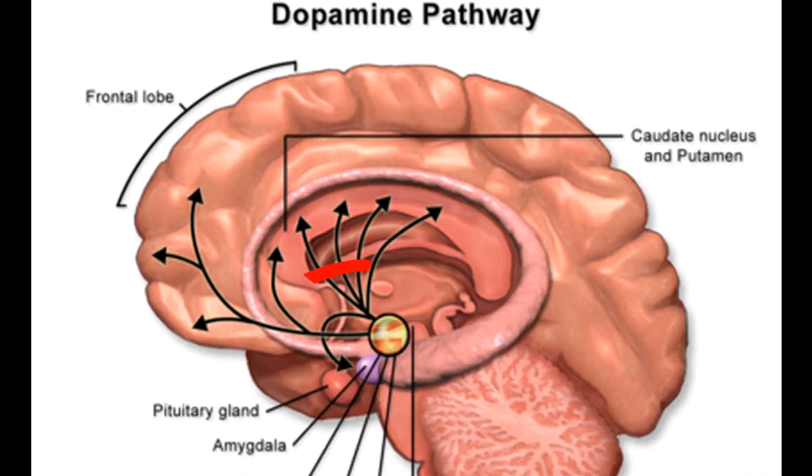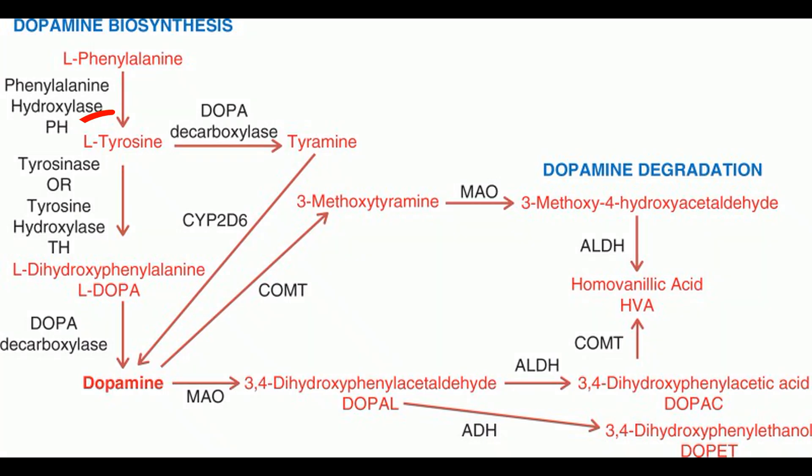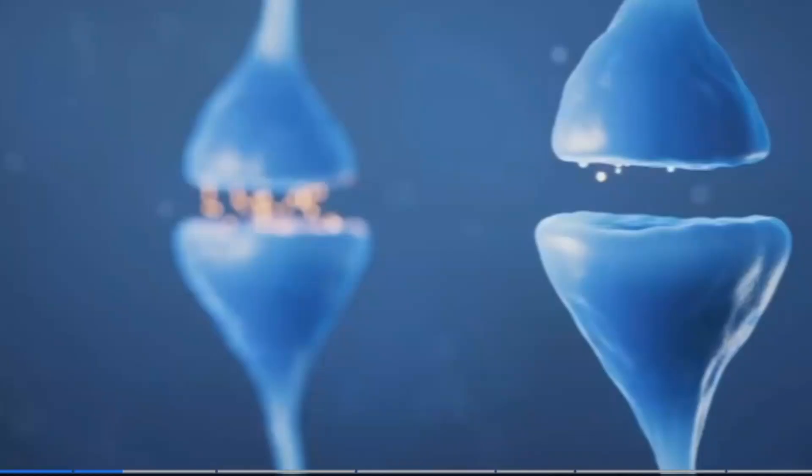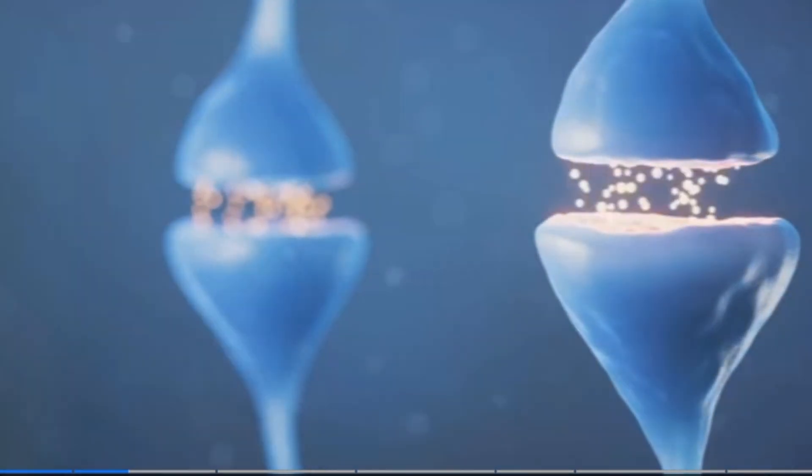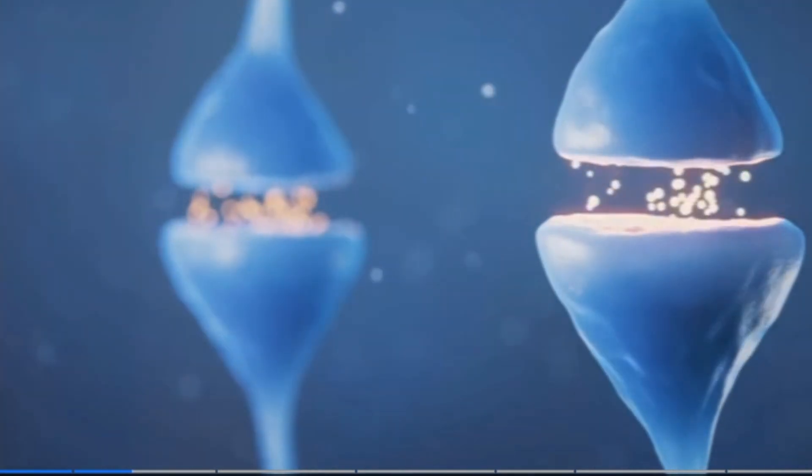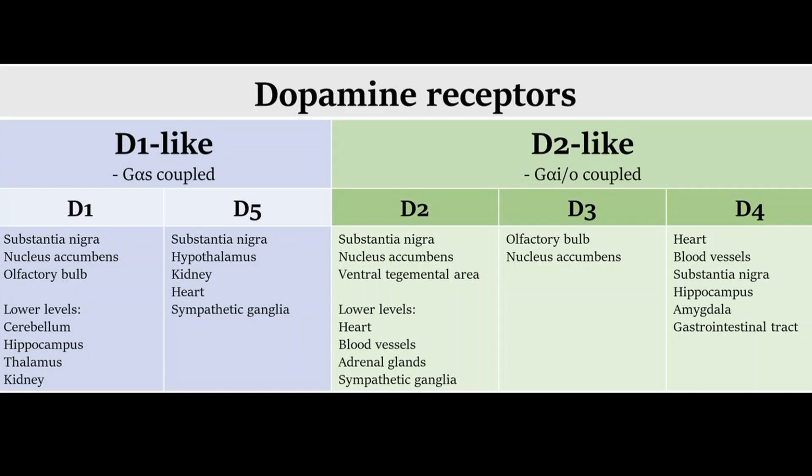It originates in areas like the substantia nigra and the ventral tegmental area. Dopamine is synthesized from the amino acid tyrosine. It is then converted to L-dopa and finally to dopamine. Once released into the synapse, dopamine binds to its receptors on the postsynaptic neuron. These receptors are classified into two families, D1-like and D2-like. Each has a different function and distribution in the brain.